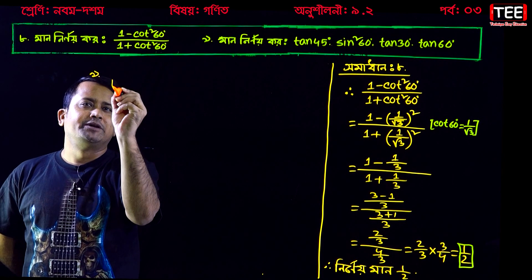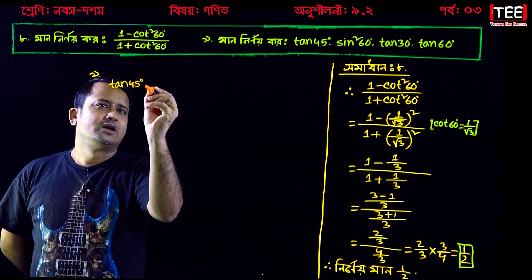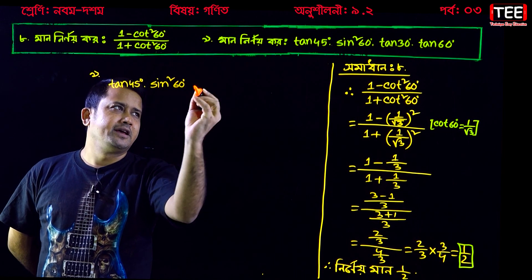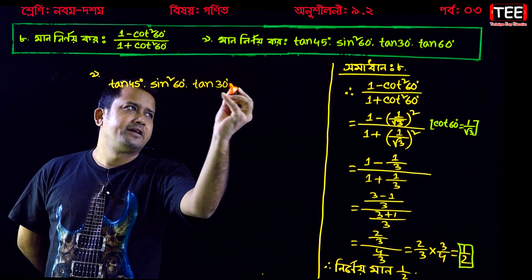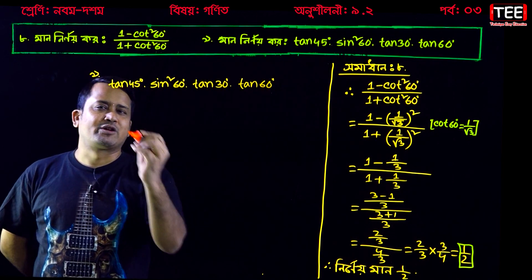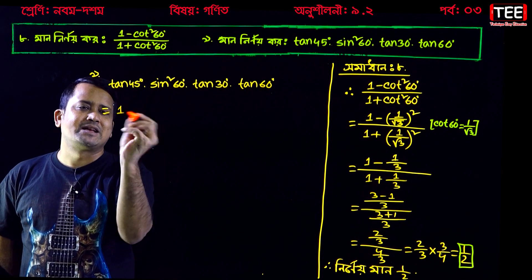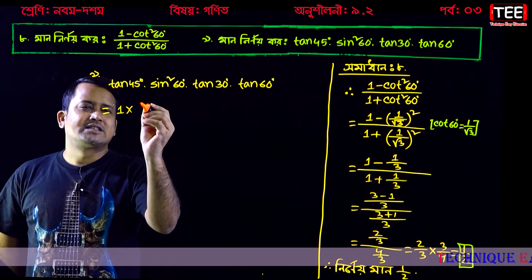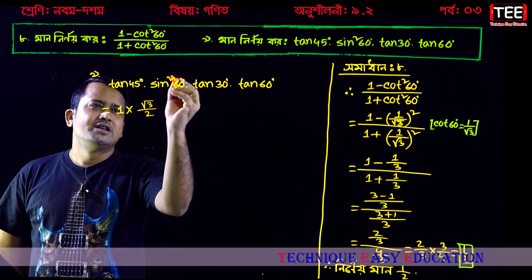So, we have tan 45 degrees, then sin squared 60 degrees, then tan 30 degrees, then tan 60 degrees. Look: tan 45 degrees equals 1. Then sin 60 degrees, sin 60 degrees equals root 3 by 2. This is the square, we will take the total square.